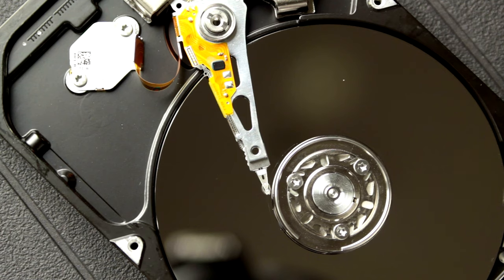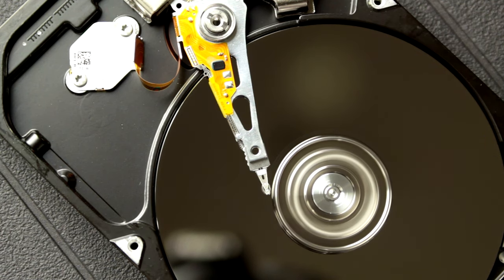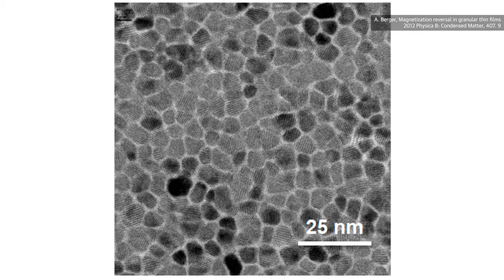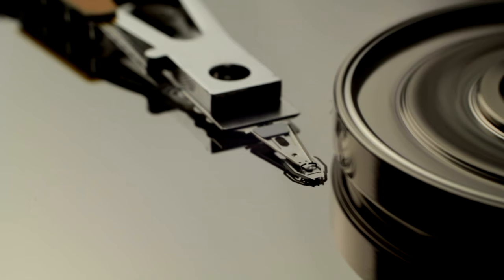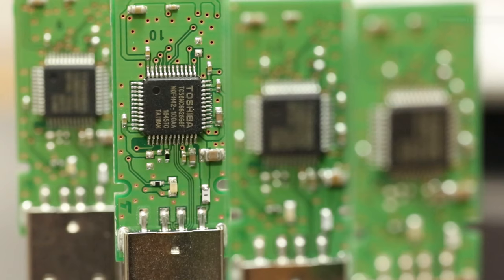But first, some basics. All digital storage holds information in a way that it can be read as either a 1 or a 0. In traditional hard drives, this took the form of tiny magnetic grains on a spinning disk. A head would move over the grains and it would read the direction of the magnetic field — if magnetic north is pointing up, it's a 1; if it's pointing down, it's a 0.